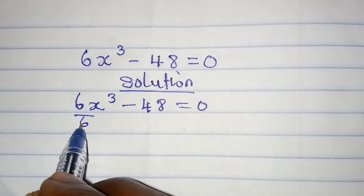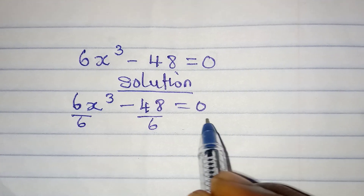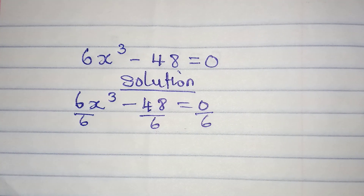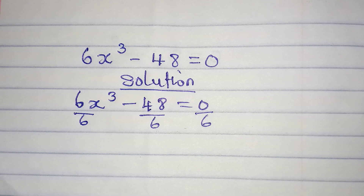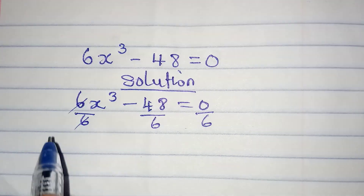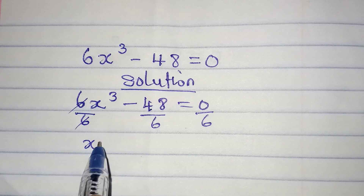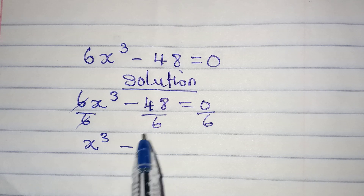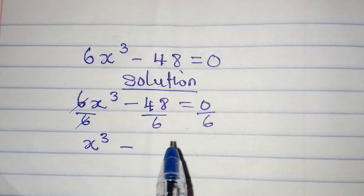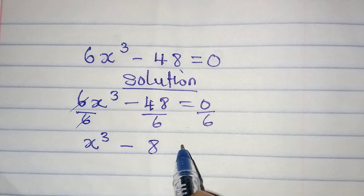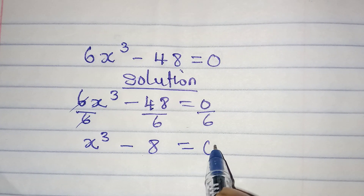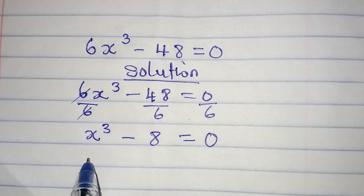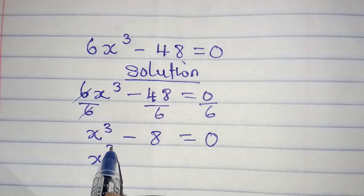The first thing we do is divide by 6 — divide this by 6 and divide this by 6. Reducing all the terms won't change anything. This will cancel, and we have x to the power of 3 minus 48 divided by 6, which gives us 8. And 0 divided by 6 gives us 0.